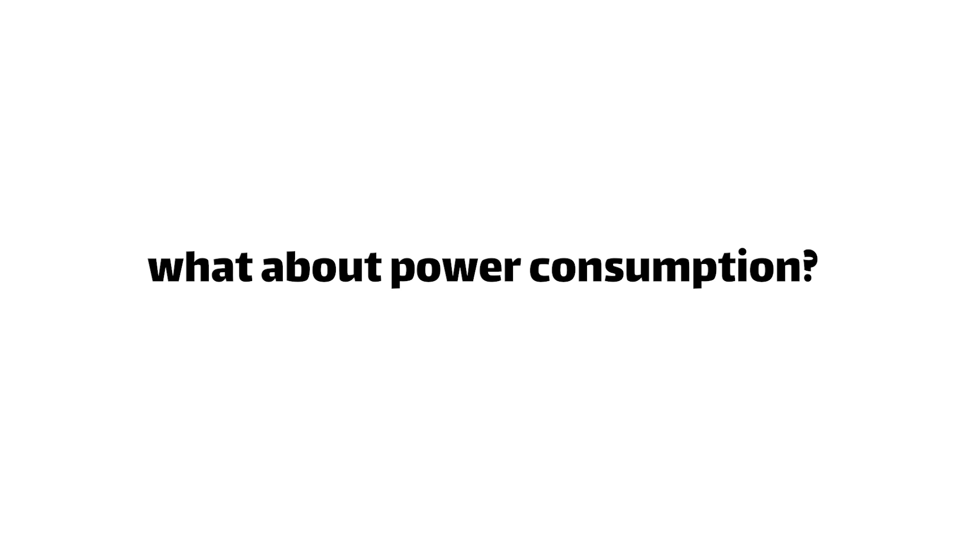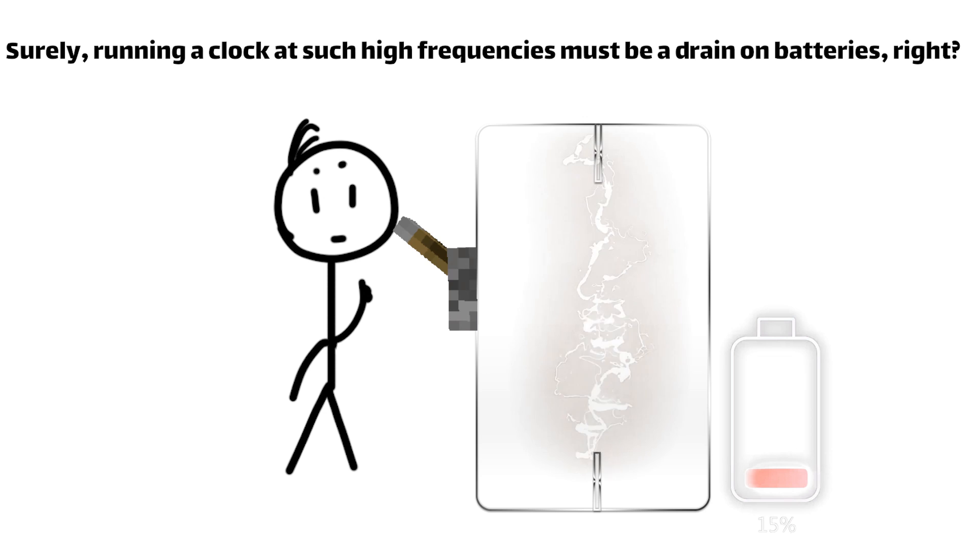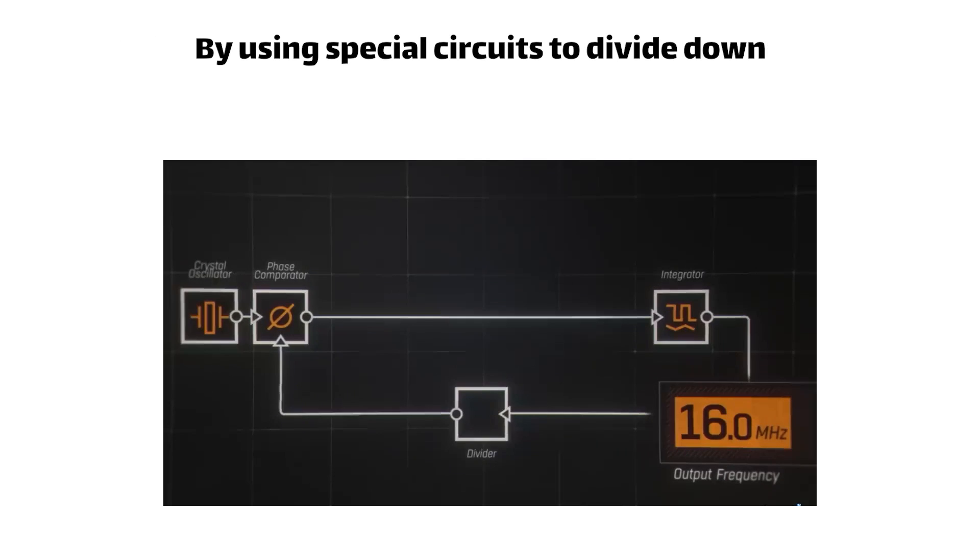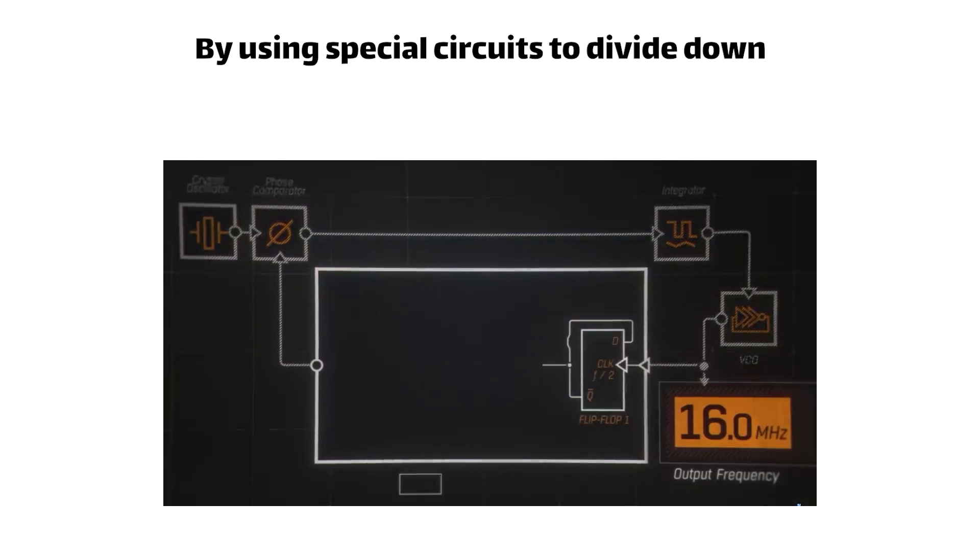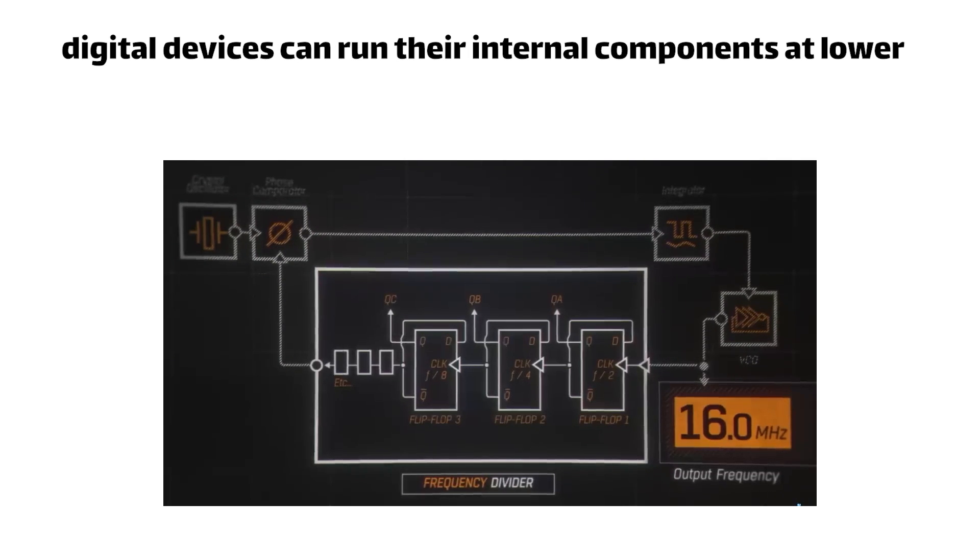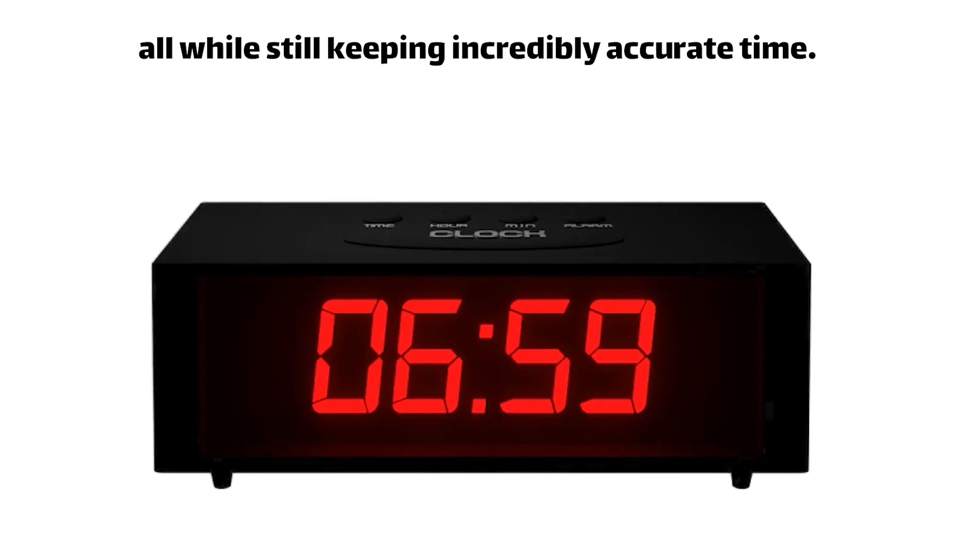But what about power consumption? Surely running a clock on such high frequencies must be a drain on the batteries, right? That's where the power of frequency dividers comes in. By using special circuits to divide down the high-frequency clock signal, digital devices can run their internal components at lower, more power-efficient speeds, all while still keeping incredibly accurate time.